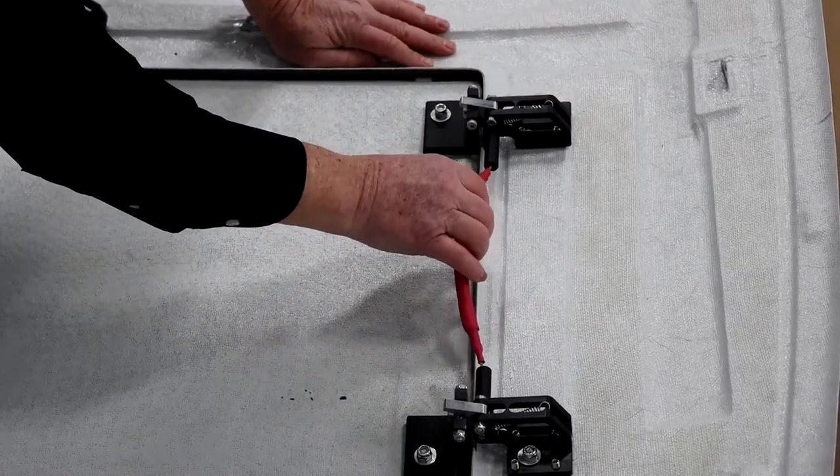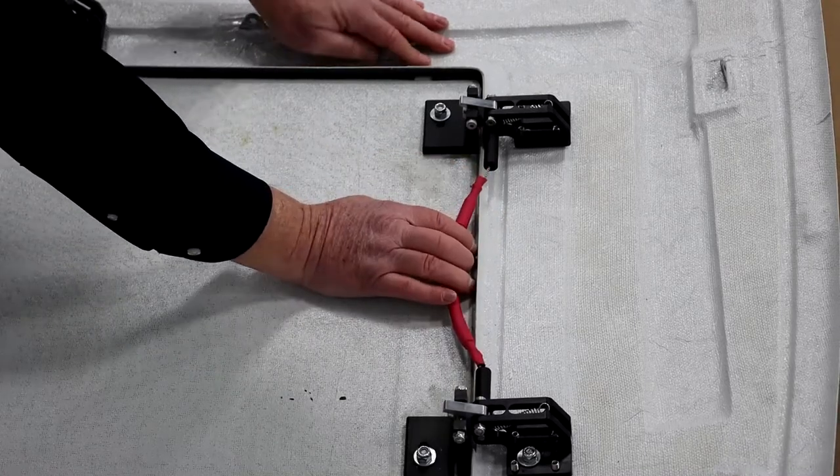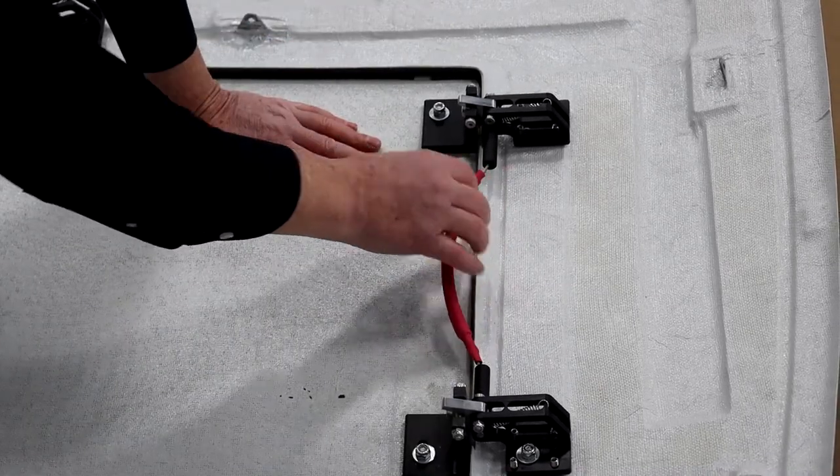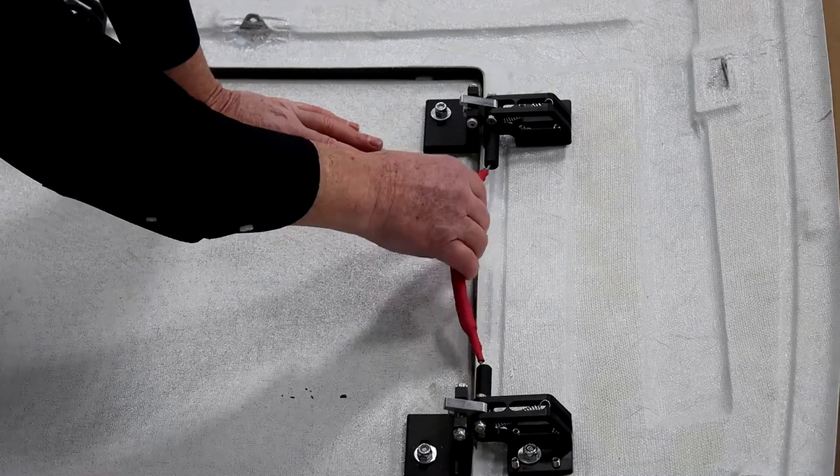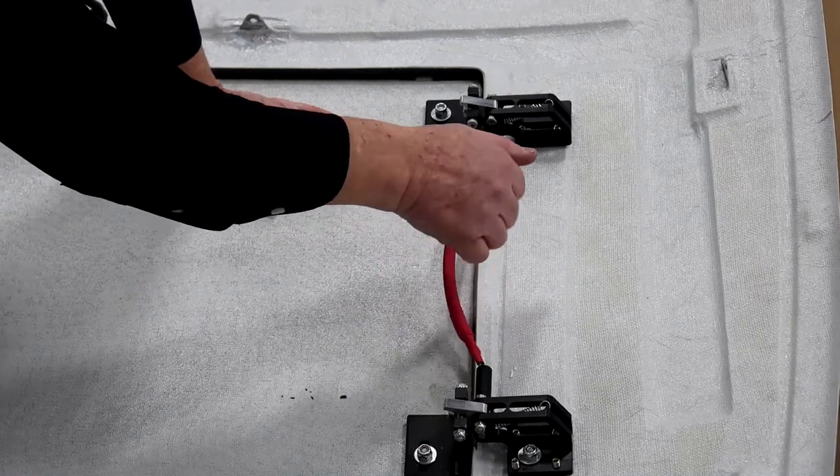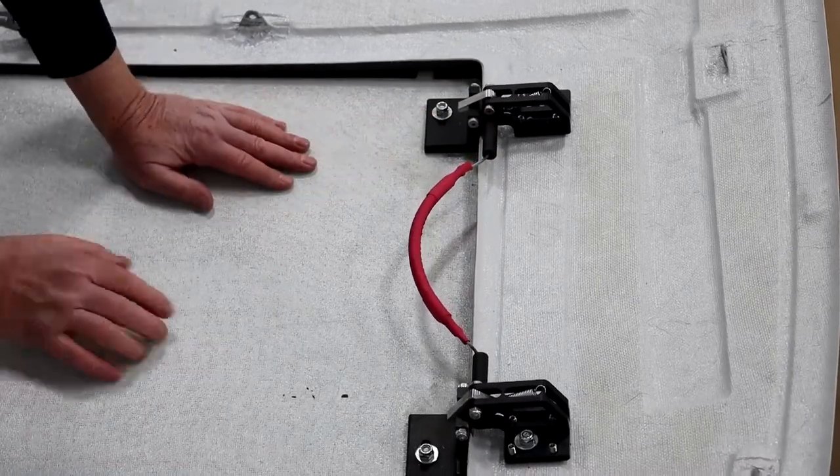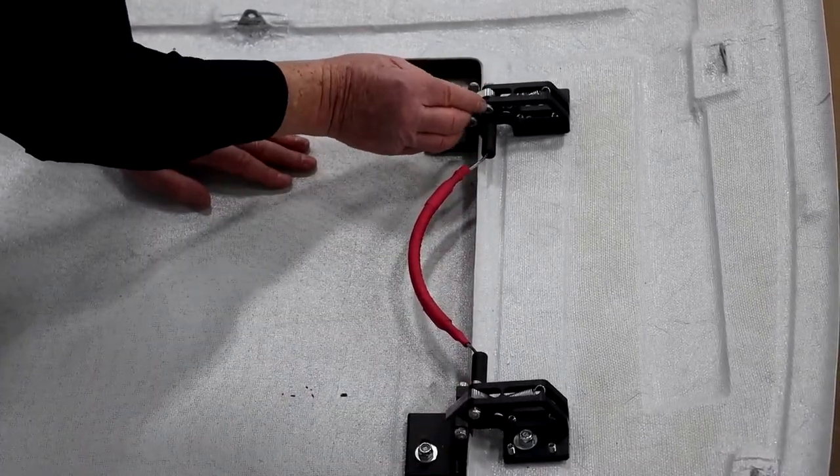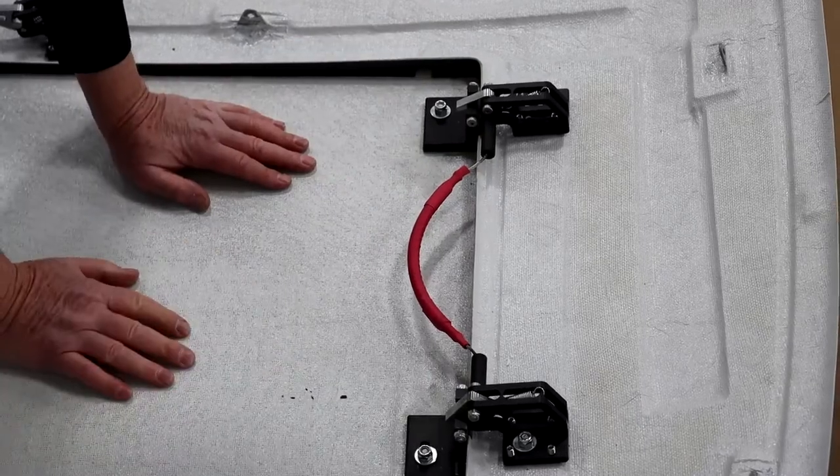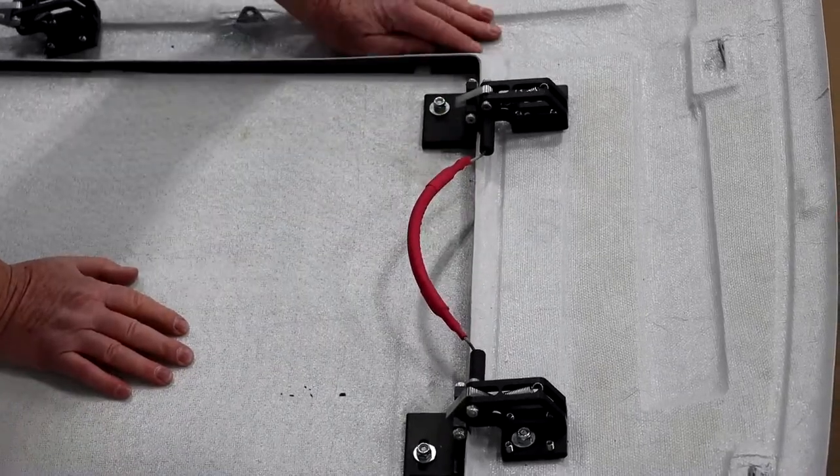When you go to release the hatch, you don't want to do a slow pull. You want to just give it a little bit of a jerk just like that to open. If you go slowly, you can cause some binding in the pin. Just give it a little jerk and pop it open.